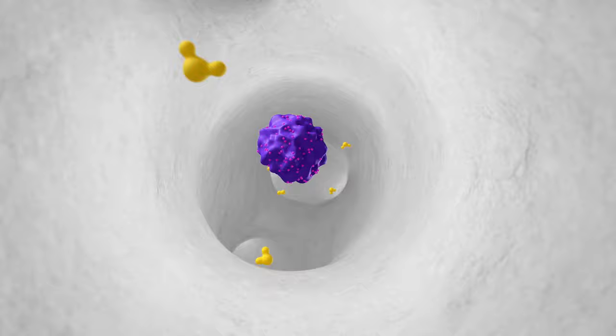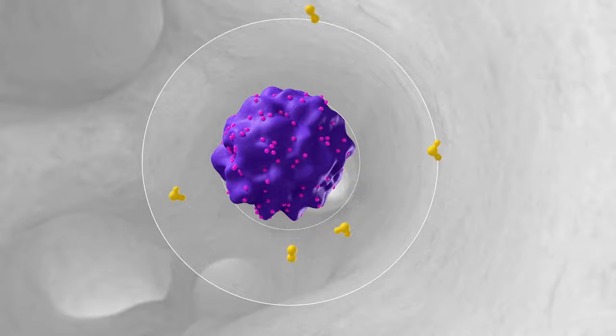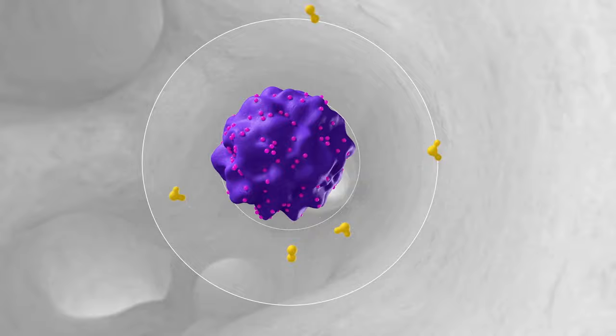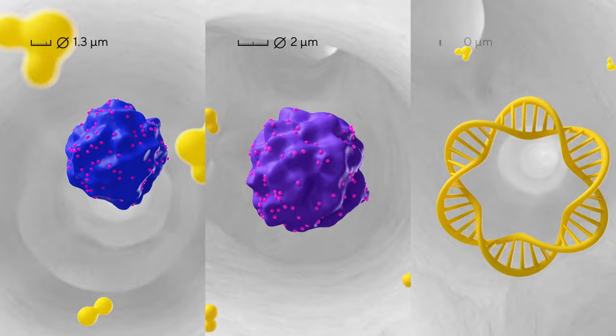The channels in the monolith are uniform and sufficiently wide to provide plenty of space for large modalities, like viral vectors, to pass through safely. Different channel sizes can be selected to accommodate a range of molecule sizes and applications.